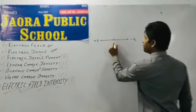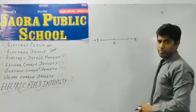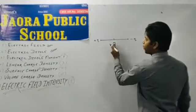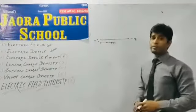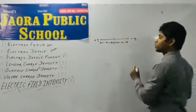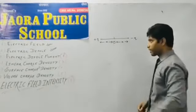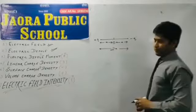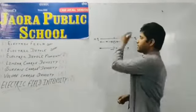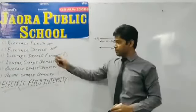And the midpoint is O. The distance of plus q from O is small a. And obviously O is the midpoint, then distance between O and minus q is also small a. And the distance between plus q and minus q is twice a. So this system is called electric dipole.